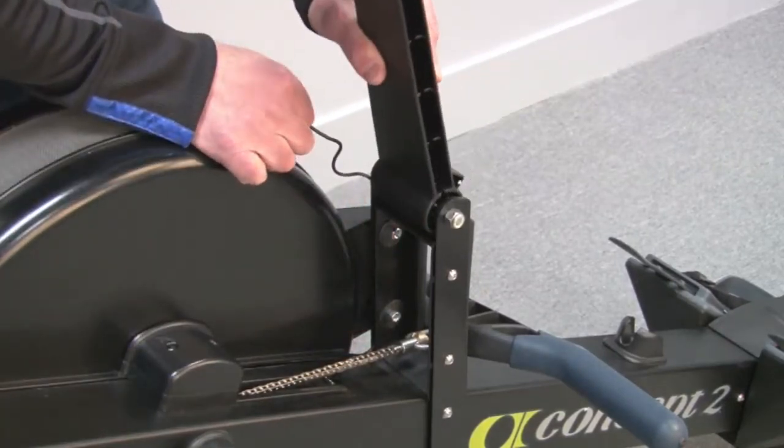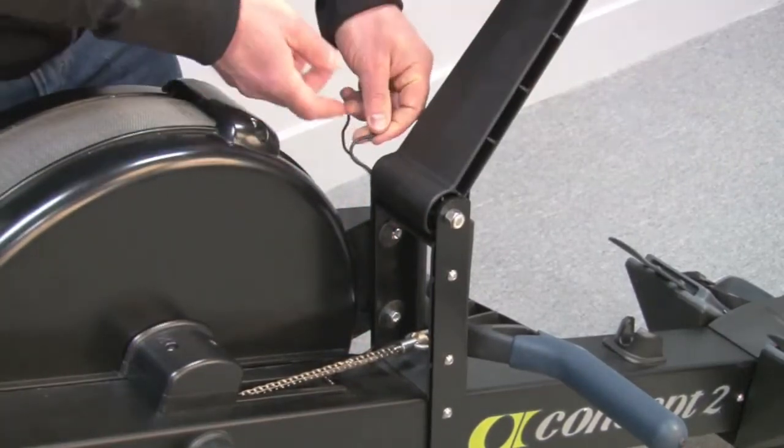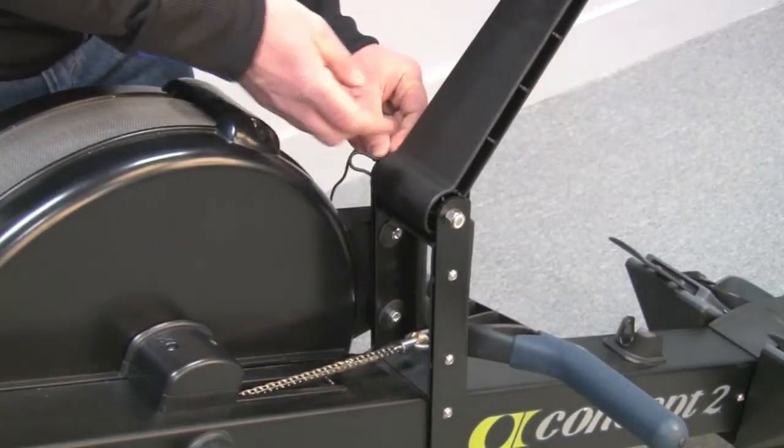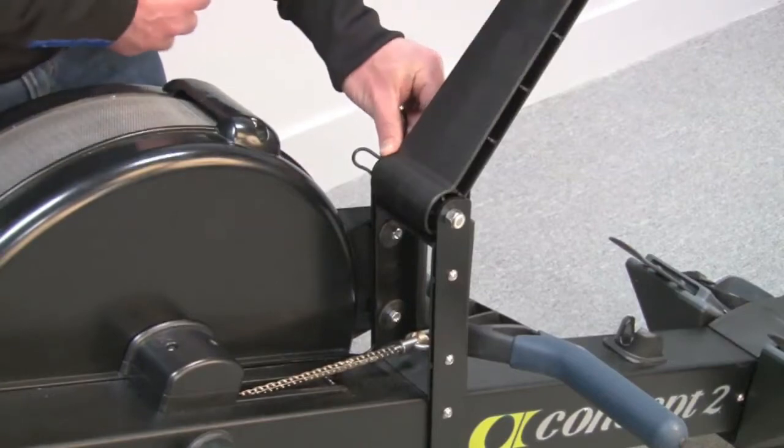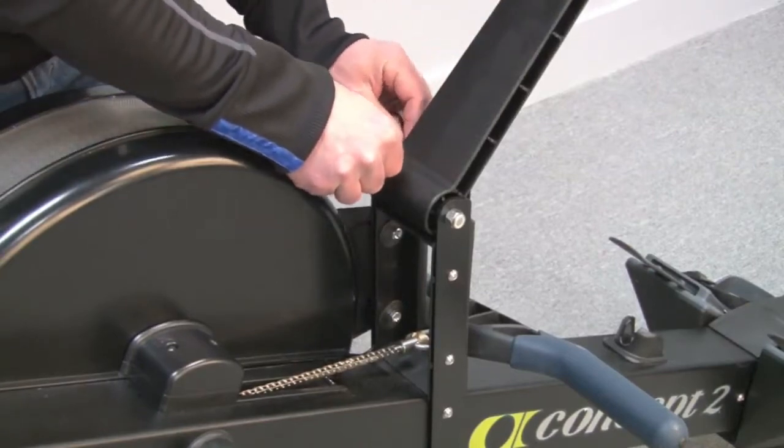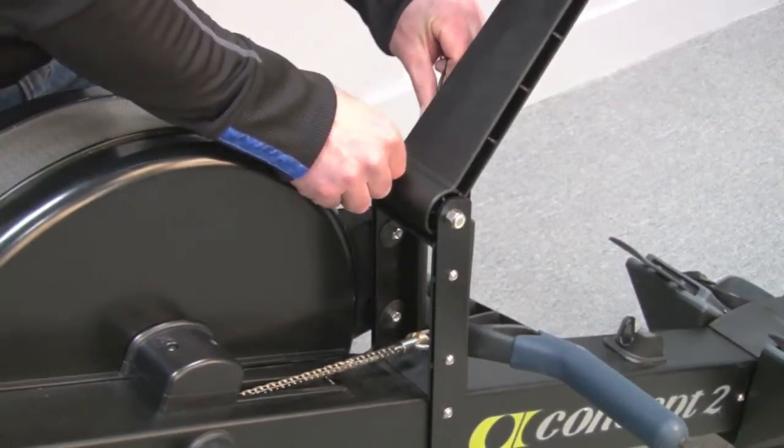When you get to the hinge point of the monitor arm, make sure you leave a little bit of a loop so there's enough room to move the monitor arm. Then continue feeding up through the side of the monitor arm.